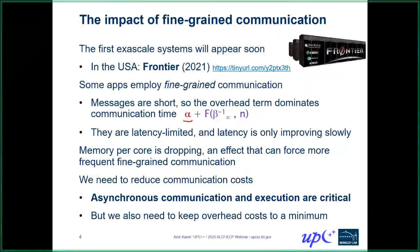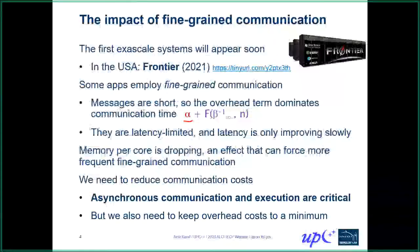Another thing we're seeing with new systems is that memory per core is also dropping as the number of cores increases. This means that applications often have to do more communication rather than replication of data, which is another system trend that encourages fine-grained communication.